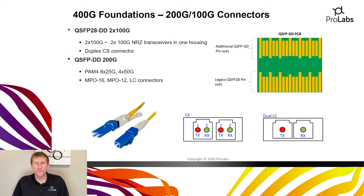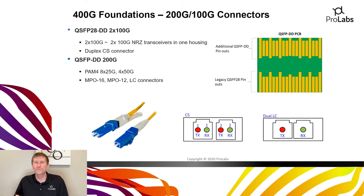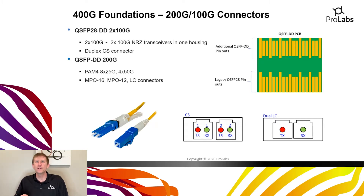Just as the LC connector doubled density over SC connectors by fitting a transmit/receive pair in the space of one SC, the CS connector fits into the space of one LC. On the face of the QSFP-28-DD transceiver, two transmit/receive pairs using CS connectors enable independent operation of two 100 gig channels. The QSFP-DD 200 gig transceivers use PAM4 in 8x25 gig or 4x50 gig configurations — these are evolving standards and we'll see many more 200 gig transceivers in the market over the next year.